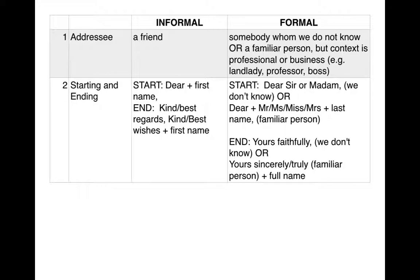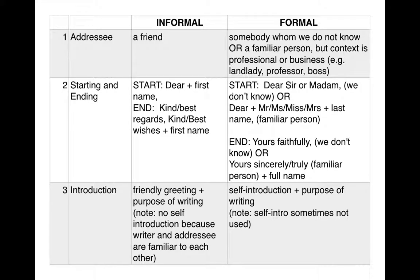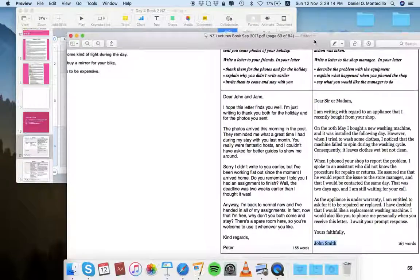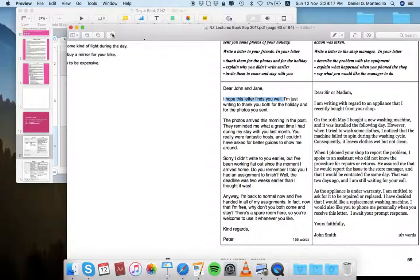Your job as a teacher here is to direct students to specific ideas. For the third point — the introduction — ask them what they notice in the first paragraph of both the informal and formal letter. Direct them to the very first sentence of the informal letter, which contains a friendly greeting: 'I hope this letter finds you well.' The second sentence reveals the purpose: 'I'm just writing to...' By comparison, a formal letter would normally state the purpose straight away.